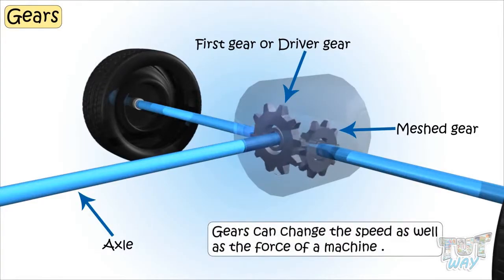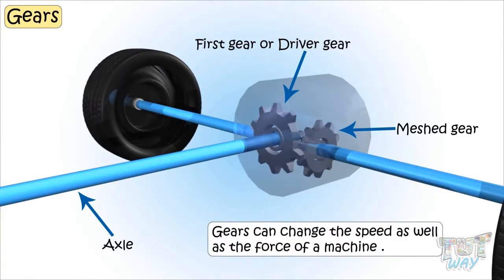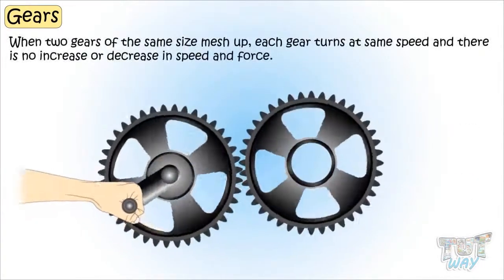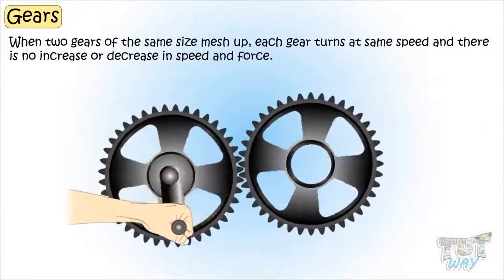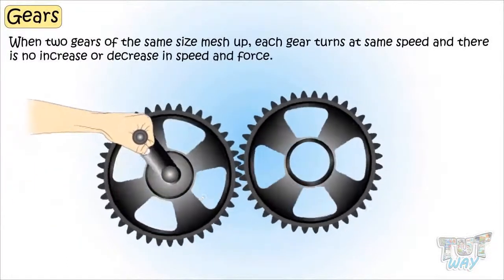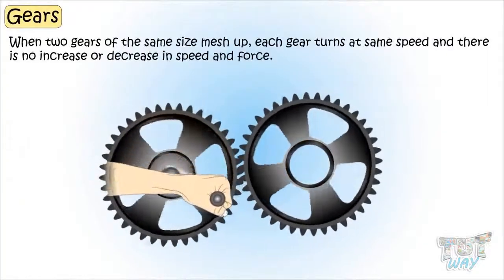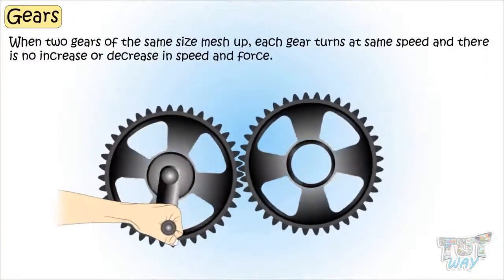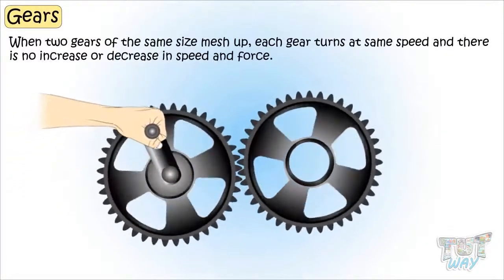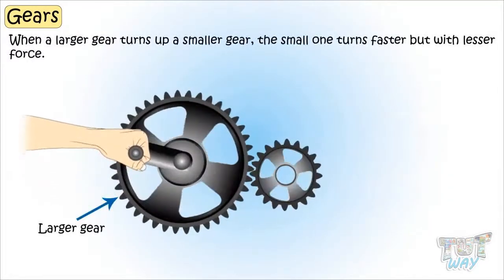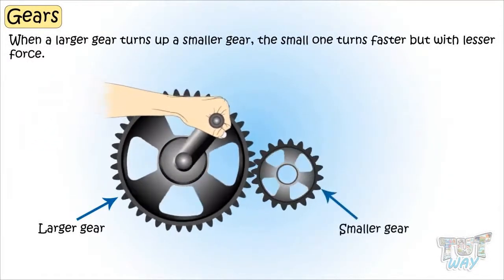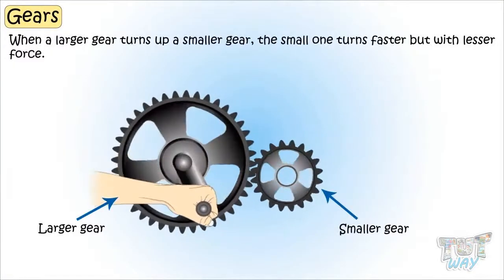Gears can change the speed as well as the force of a machine. When two gears of the same size mesh up, each gear turns at the same speed and there is no increase or decrease in speed and force. But when a larger gear turns a smaller gear, the smaller gear turns faster.